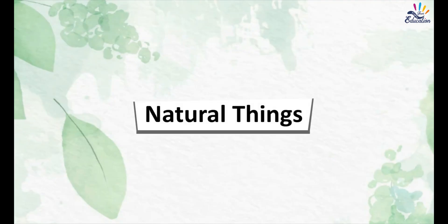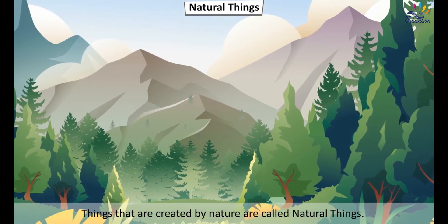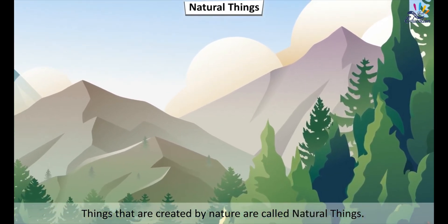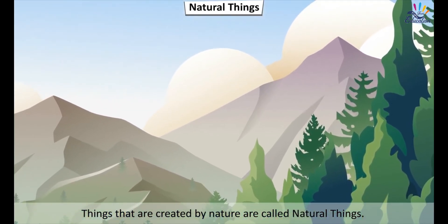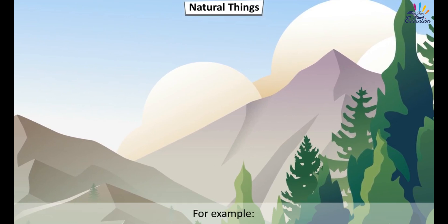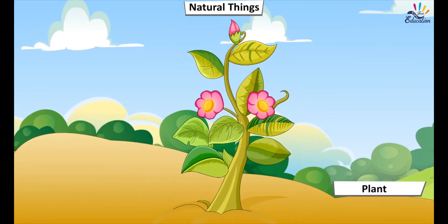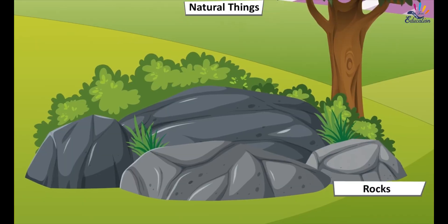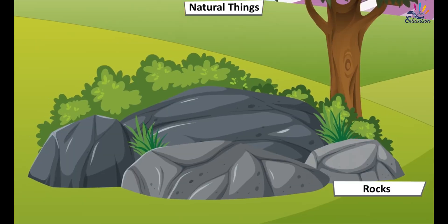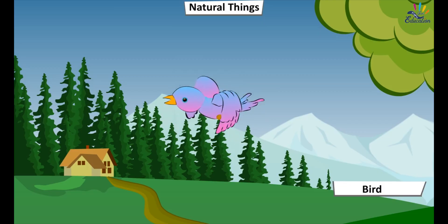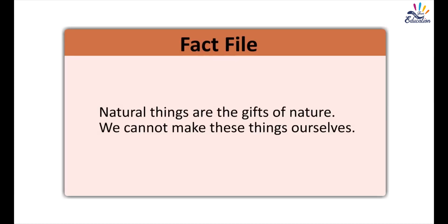Natural Things: Things that are created by nature are called natural things. For example, plant, sun, rocks, bird. Fact file: Natural things are the gifts of nature. We cannot make these things ourselves.